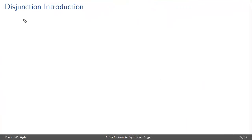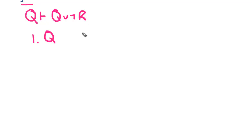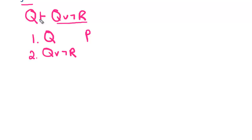Here's a simple example: reasoning from Q to Q or not R. We set up the proof by writing the formula to the left of the syntactic turnstile, label it as line one, and indicate it's a premise. Next, we reason to Q or not R using disjunction introduction — because disjunction introduction says we can reason from a formula to a disjunction provided the resulting disjunction has that formula as one of its disjuncts. So we reason from Q to Q or not R, citing line one and disjunction introduction.